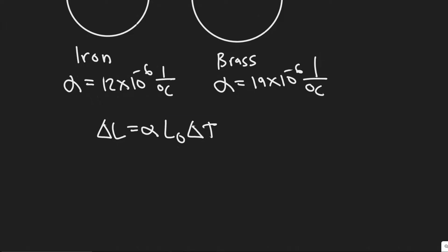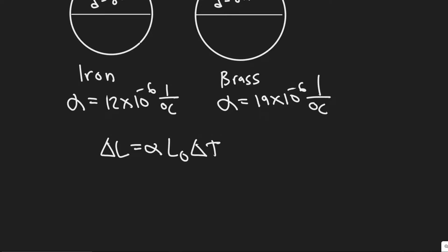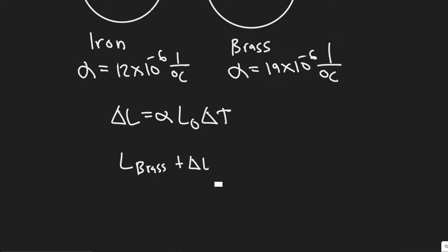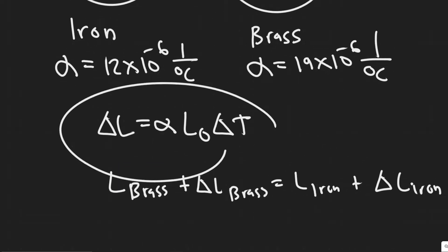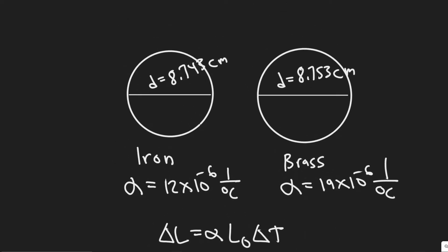Let me explain how we're going to do this. We're trying to find the common temperature they should be brought to, so we're going to set them equal to each other. The length or diameter of the brass plus the change in length of the brass is going to equal the length of the iron plus the change in length of the iron. The length here represents the diameter. This formula is generally used for a wire, but we can use the same formula for the diameter of a ring.